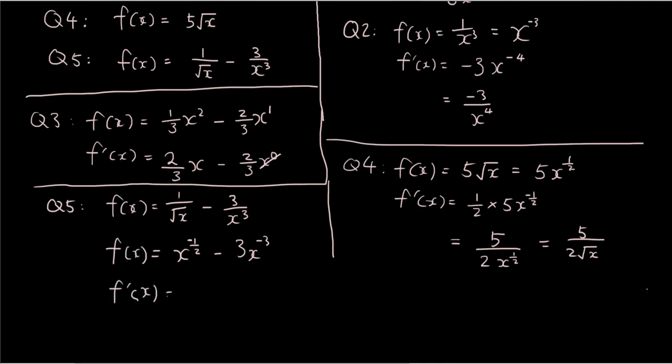Now let's do f'(x). We bring the power to the front and we minus 1 to the power. So negative a half minus 1 becomes negative 3 over 2.